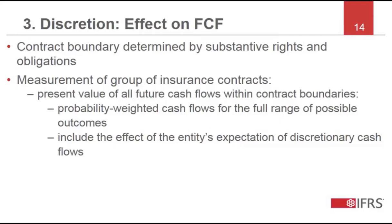IFRS 17 requires an entity to determine an insurance contract boundary by considering the substantive rights and obligations created by the contract. Once the contract boundary has been determined, IFRS 17 requires the measurement of a group of insurance contracts to include an unbiased estimate of all the expected cash flows within the contract boundaries, including those that are at the discretion of the entity. The contract boundary establishes the existence and extent of the contract liability, and the unbiased estimate of all the expected cash flows, regardless of whether they are enforceable, determines the measurement of the group of contracts.